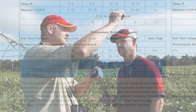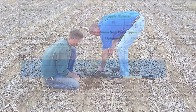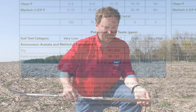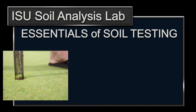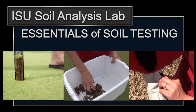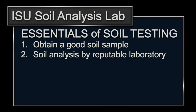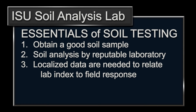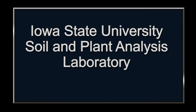An agronomist with experience in working with a specific grower in specific soils, under specific weather and management conditions, and considering the current costs of fertilizer and value of crop, may wish to adjust this basic recommendation. Soil testing is a valuable tool for the grower to maximize profit per acre while minimizing negative environmental impacts. It involves taking a good soil sample from the field, carefully analyzing the soil in a reputable laboratory, collecting localized data that relates the laboratory index to field responses, and making an informed fertilizer and lime recommendation for the crop to be grown. The ISU Soil and Plant Analysis Laboratory is located in the Department of Agronomy at Iowa State University in Ames, Iowa.